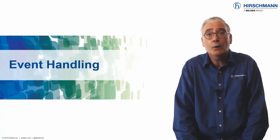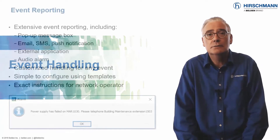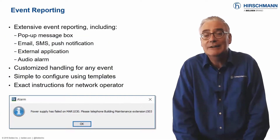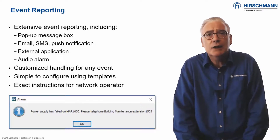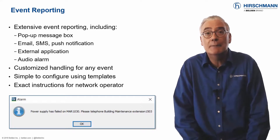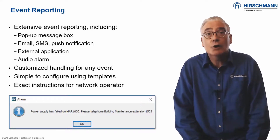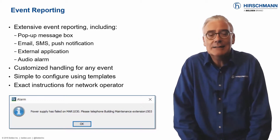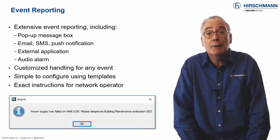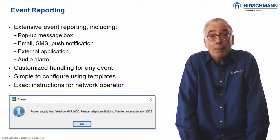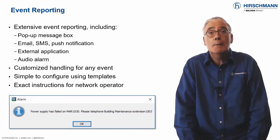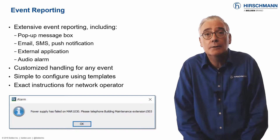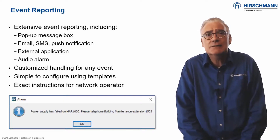Industrial HiVision gives you a choice of how to achieve these objectives. Event logs store information for later use, but often if an event occurs, you or your network operators need to know immediately. Industrial HiVision offers many options for event reporting: an audio alarm will attract attention, standard options like email, SMS and push notifications make use of mobile phones, an event can start any other application, and a pop-up message box can give the operator precise instructions for dealing with the alarm. Event handling can be customized to suit your requirements.